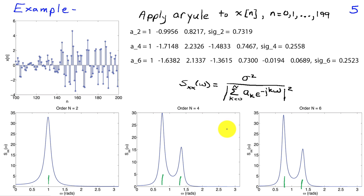The Yule-Walker equations give us a relationship between the autocorrelation or autocovariance of the process and the autoregressive model parameters. Given data, they can be used to obtain an estimate of an autoregressive model, as demonstrated in this example.